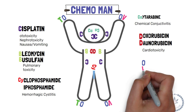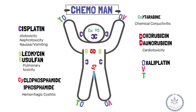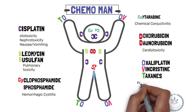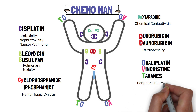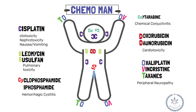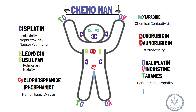O, V, and T on the arms and legs represent oxaliplatin, vincristine, and taxanes. The toxicity of these agents leads to peripheral neuropathy. I around the genital area represents irinotecan. The toxicity of irinotecan results in diarrhea.